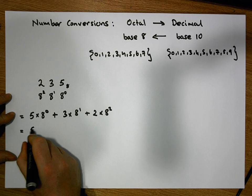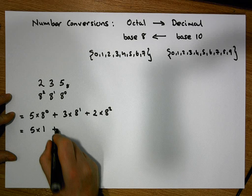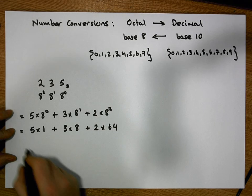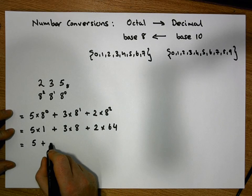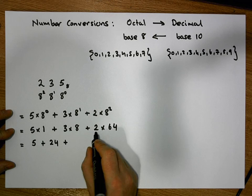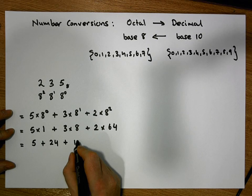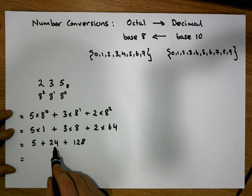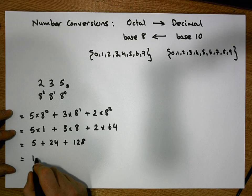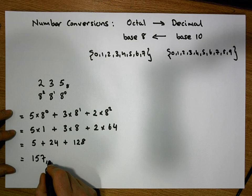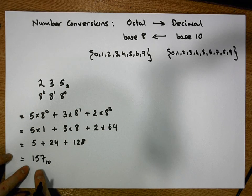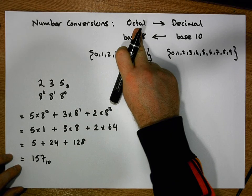So 5 represents five 8s to the power of zero, which is five ones. Then 3 represents three 8s, which is 24. And 2 represents two 64s, which is 128. That gives us 5 plus 24 plus 128, which equals 157 in base 10. So the octal number 235 in base 8 is equivalent to the decimal number 157 in base 10.